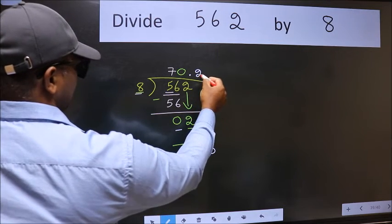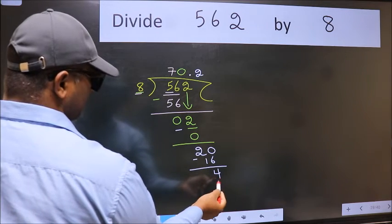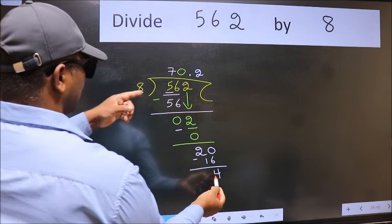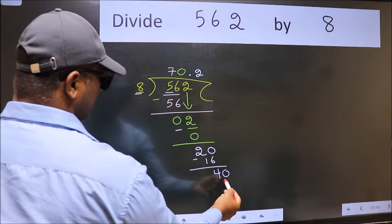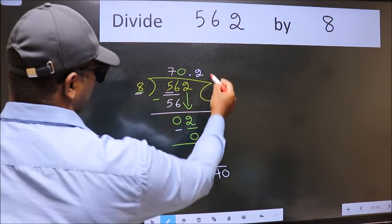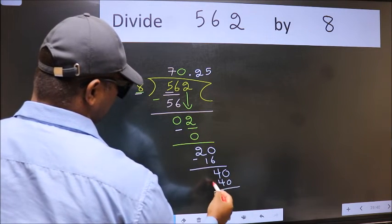Now we subtract, we get 4. 4 smaller than 8. We already have the decimal, so directly take 0. 40. When do we get 40 in 8 table? 8 fives 40. Now we subtract.